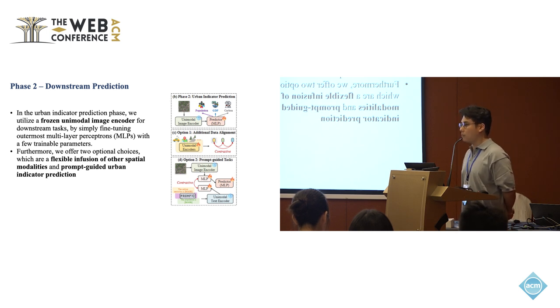In our paper, it could be some carbon or population or GDP prediction. What we need to do is simply fine tuning the outermost multi-layer perceptron with a few trainable parameters.